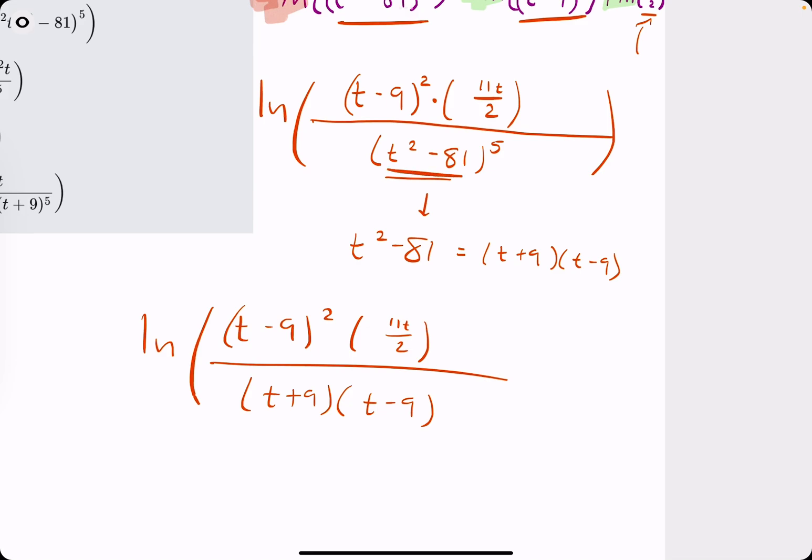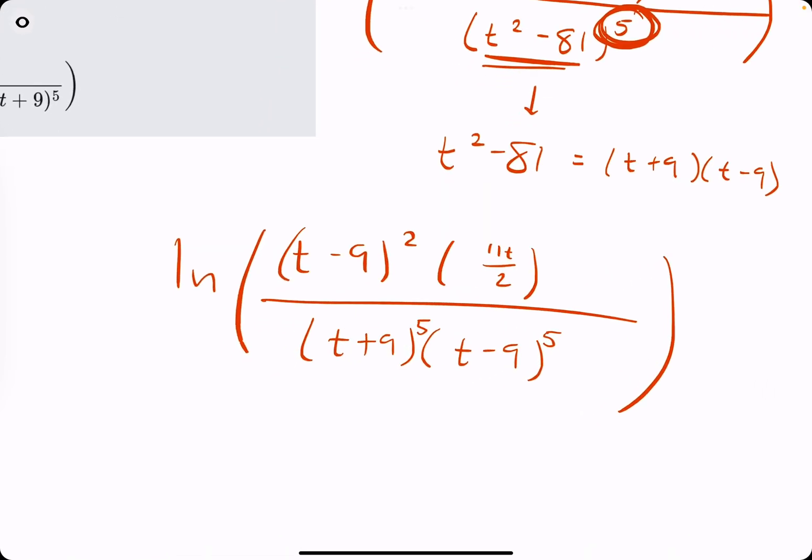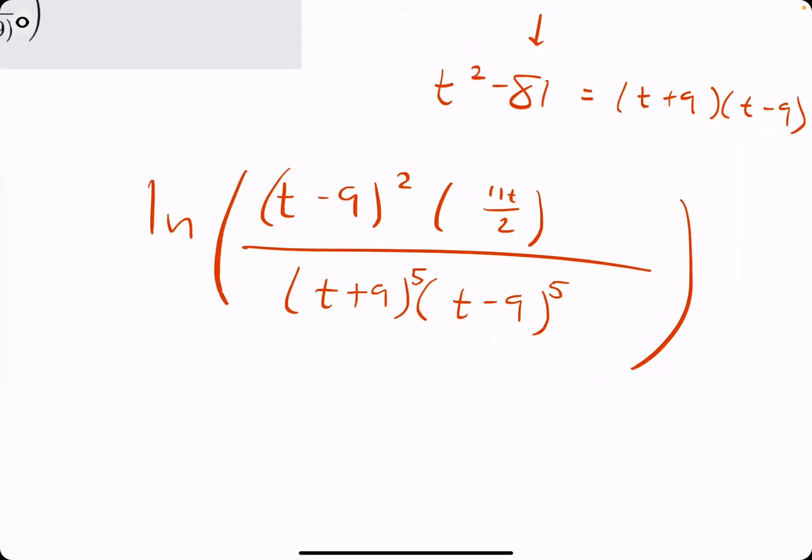we're going to factor the denominator into (t + 9) and (t - 9). So we factored t² - 81 into (t + 9)(t - 9). Since t² - 81 had an exponent of 5, then both of these factors get exponents of 5. Just like that. So now,